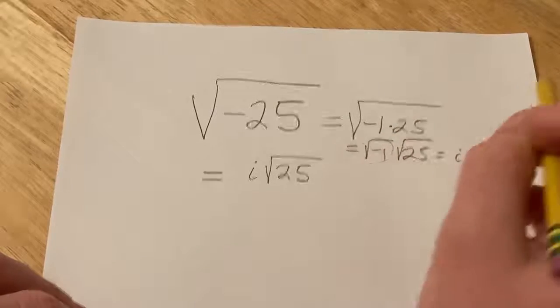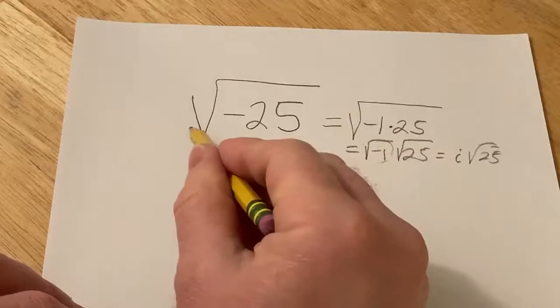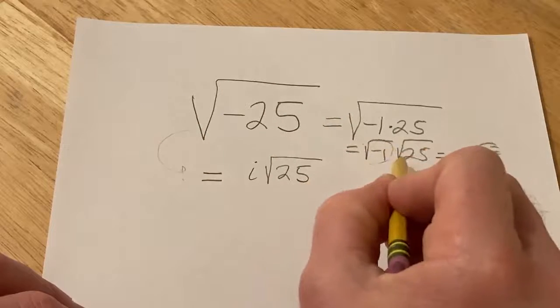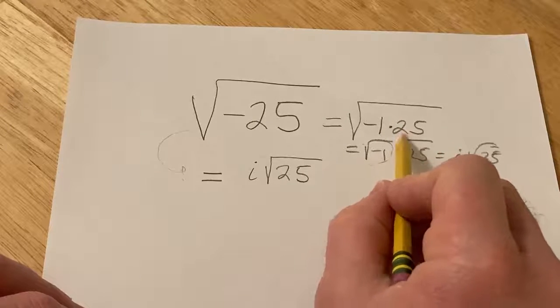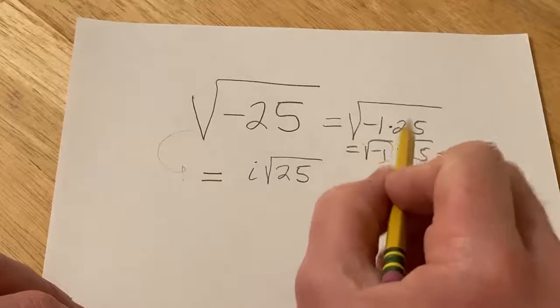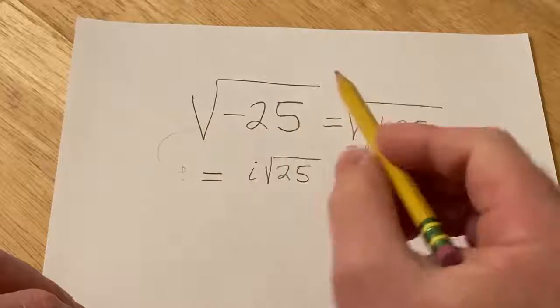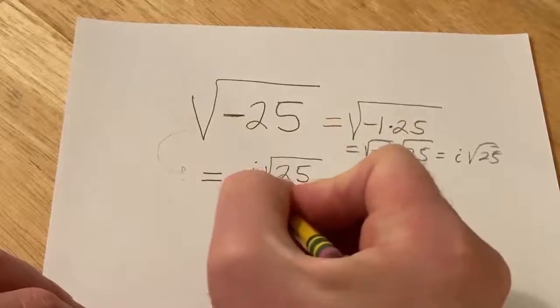Now you want to be really careful. It's probably better just to go from here to here. And the reason I say that is if both of these numbers were negative, like if this was a negative 25, you couldn't do this step. So as a general rule, the way people do it is whenever you see a negative, you put the i there.